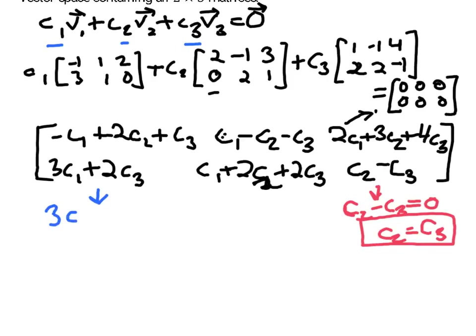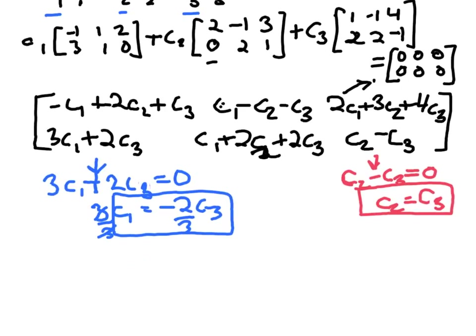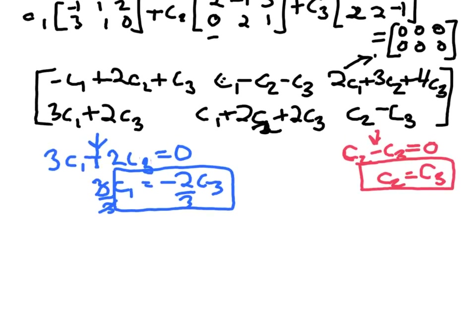Another simple equation from the system is 3C1 plus 2C2 equals 0. Since C2 equals C3, we have 3C1 equals negative 2C3 after moving terms over, and dividing both sides by 3 gives C1 equal to negative 2/3 times C3. So now we have C1 and C2 both expressed in terms of C3.